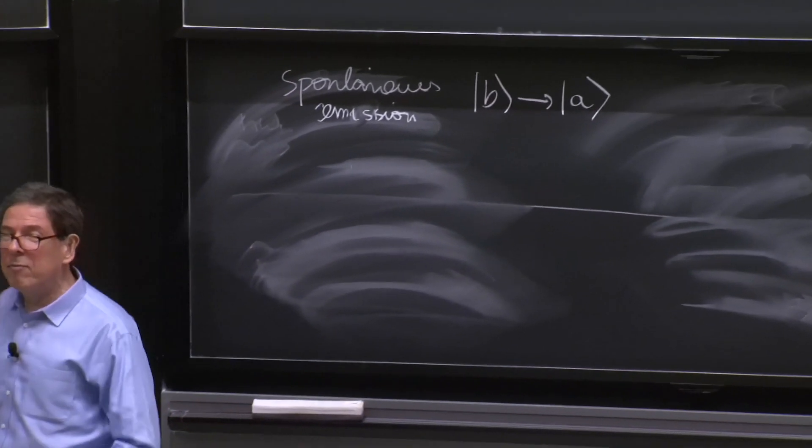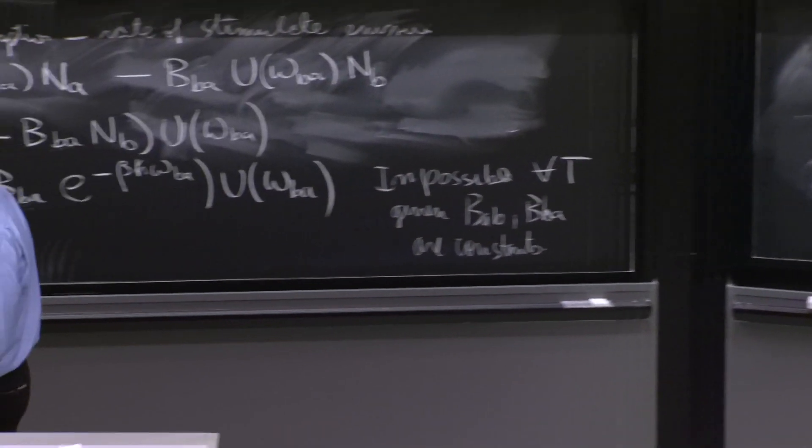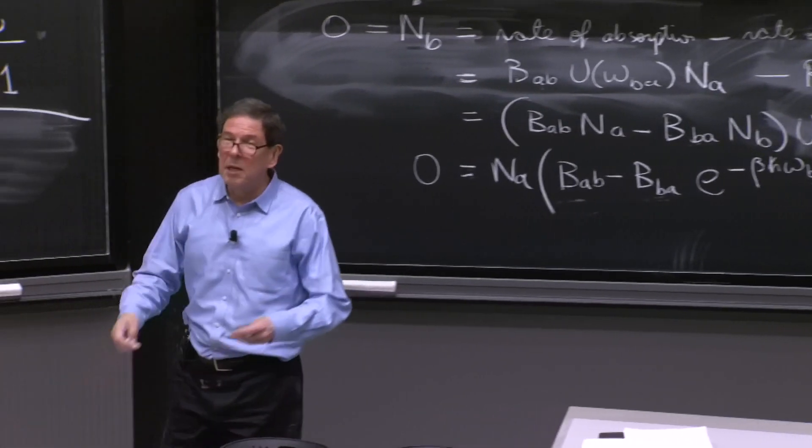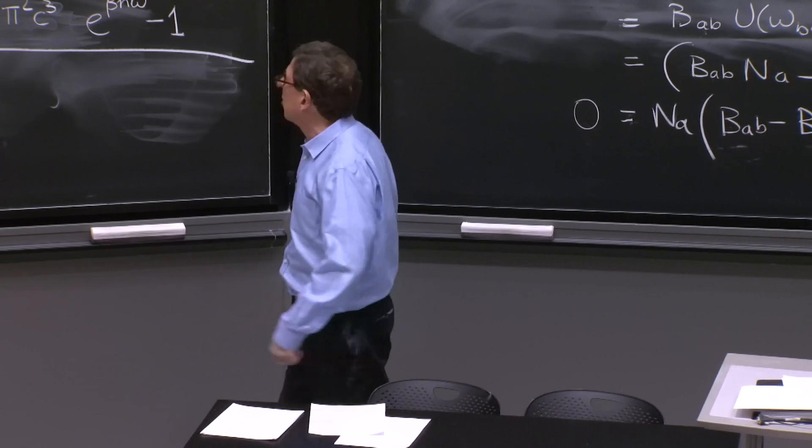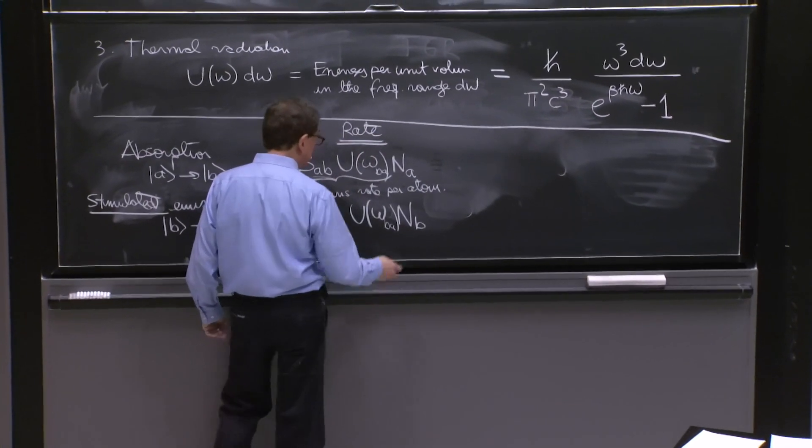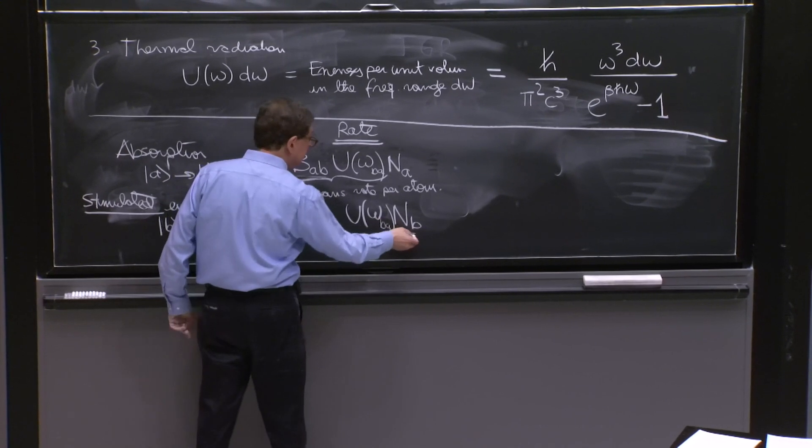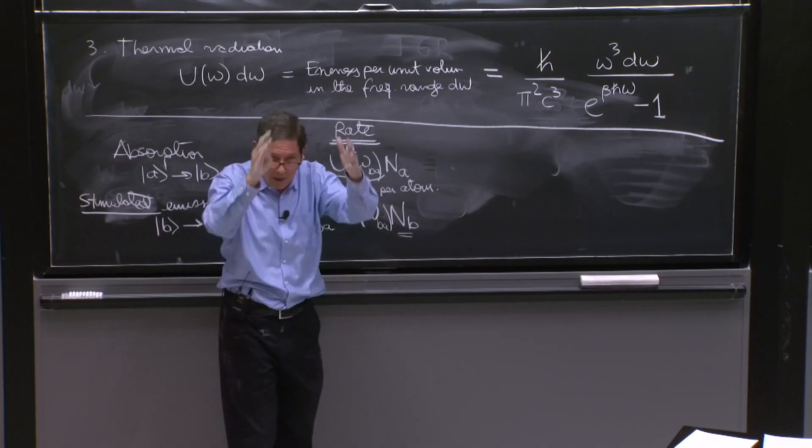But it's not going to depend that rate on the number of photons because it's happening independently of the photons, so we don't have this U factor. We do have the NB because each of the B atoms can spontaneously decay, but we don't have the U factor.